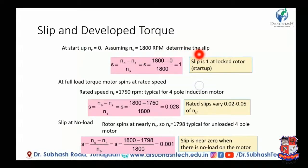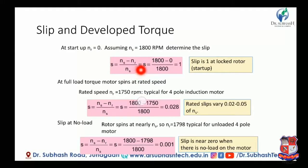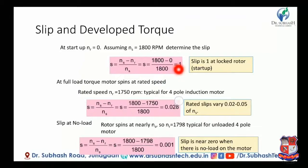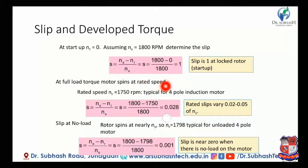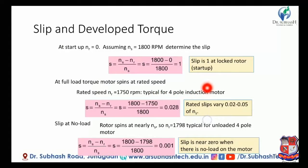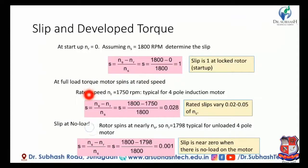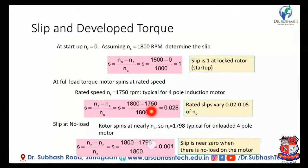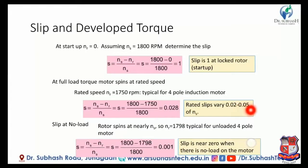At full load torque, the motor spins at rated speed. The rated speed for a 4-pole induction motor is typically 750 rpm. The full load speed gives a slip of approximately 0.028. Rated slip varies between 0.02 to 0.05 of Ns. So at full load, the rotor spins nearly at synchronous speed Ns.